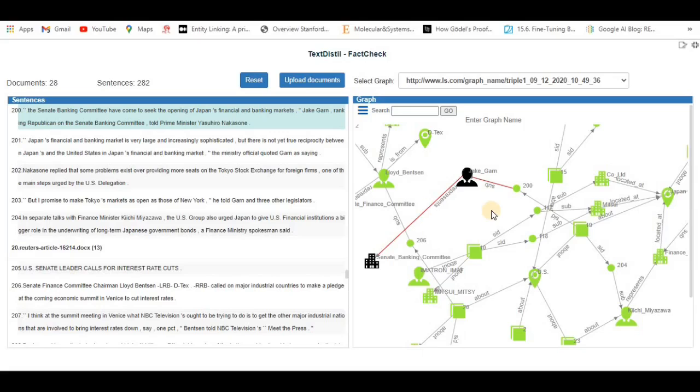This brings to close the short demo showing knowledge triples being extracted from plain text such as news articles and further loading them into a standard RDF triple store to be queried through SPARQL for various applications like the fact check here and other BI tools for analytics.